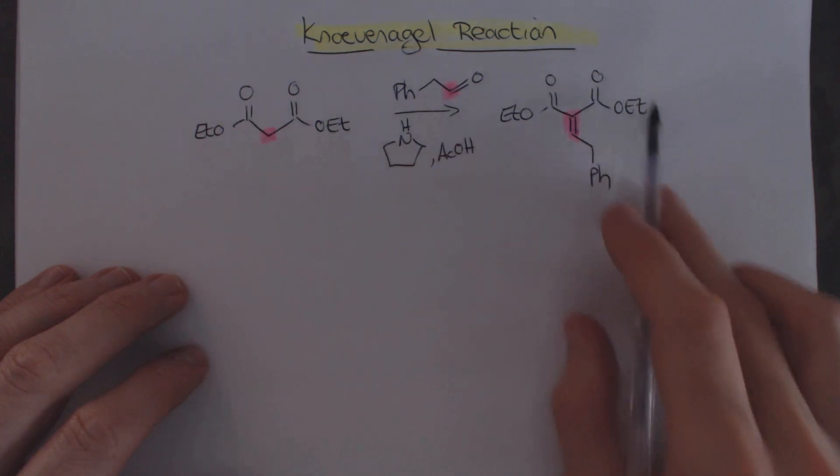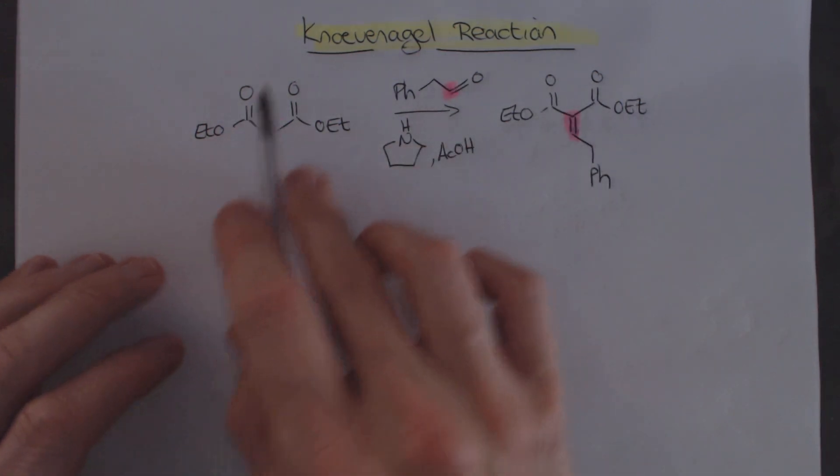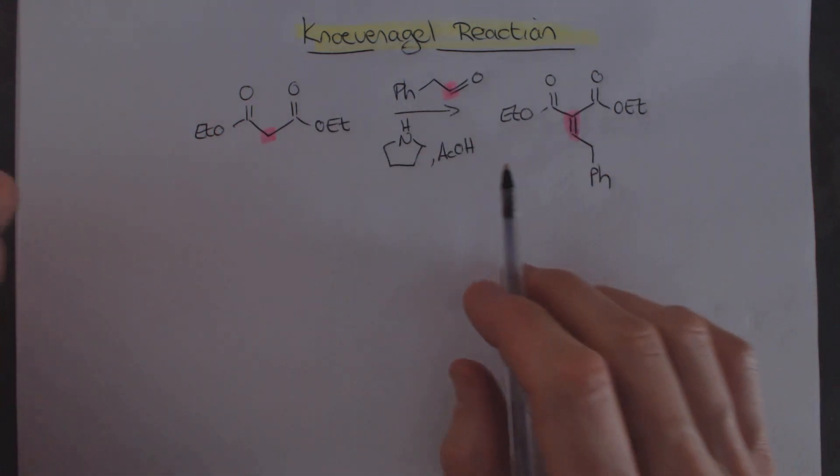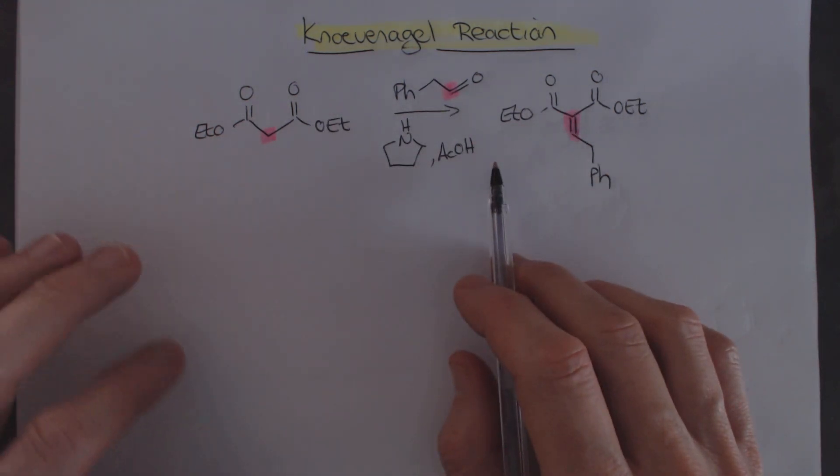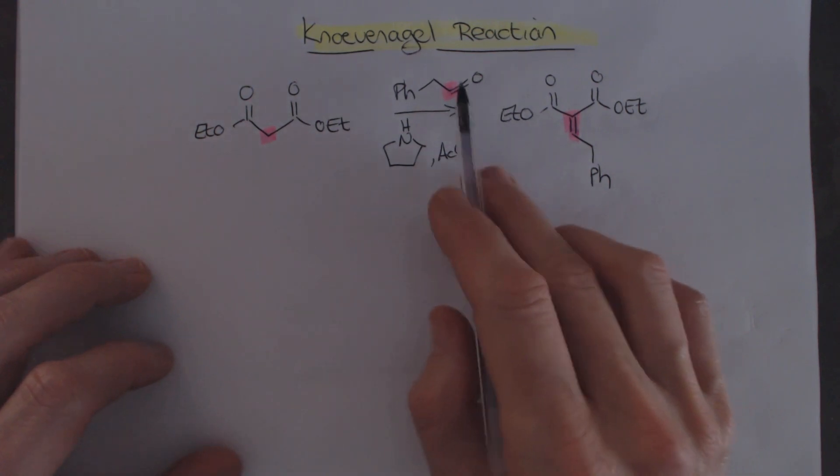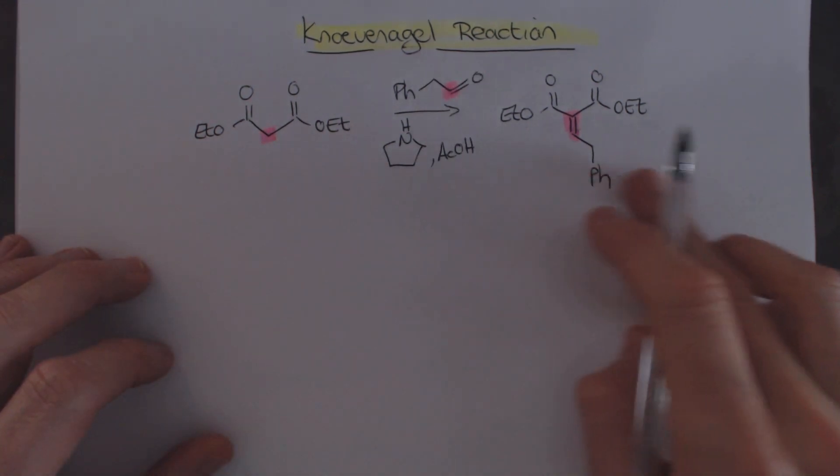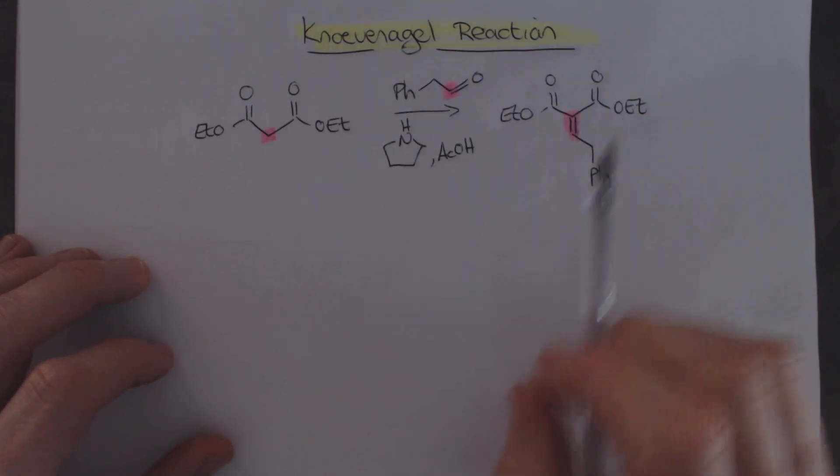And what's cool about it is that you can use a weak base to effect this. And that means you can do this under thermodynamic conditions. Nice room temperature, you can stir things together, you don't have to be working with very strong bases and trying to get control even with an enolizable aldehyde. So that's an advantage of the Knoevenagel aldol reaction.